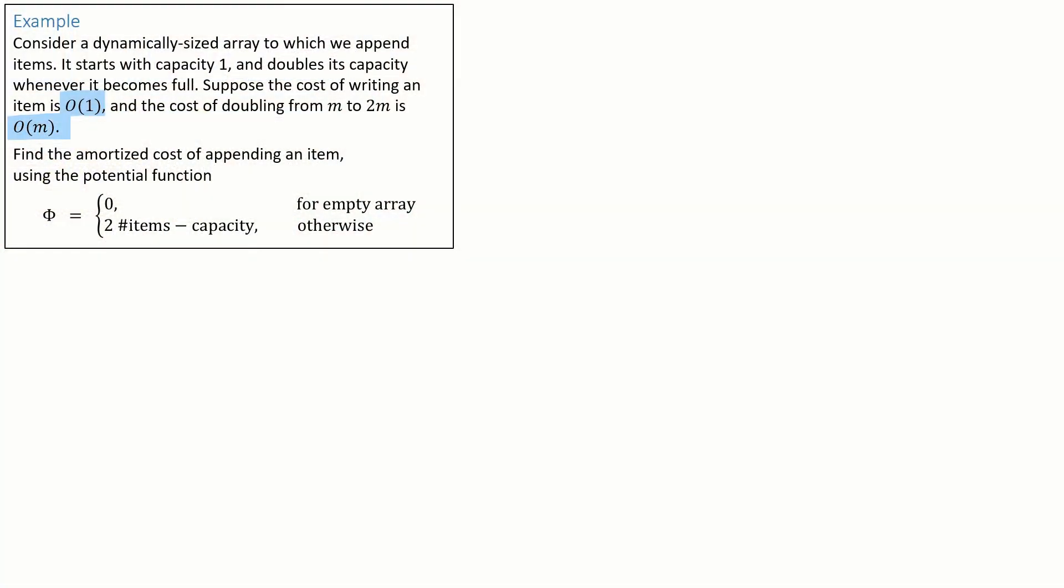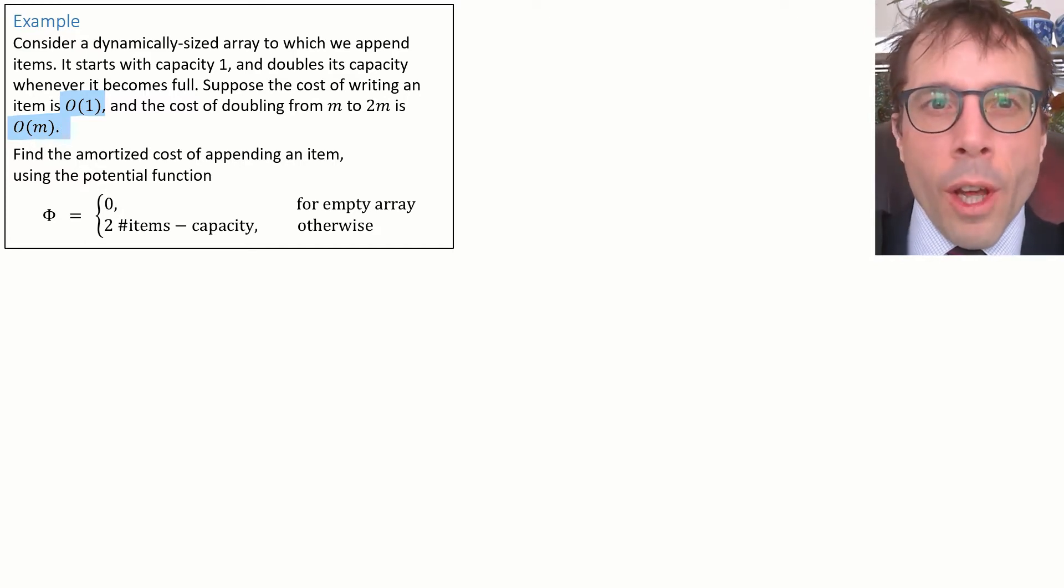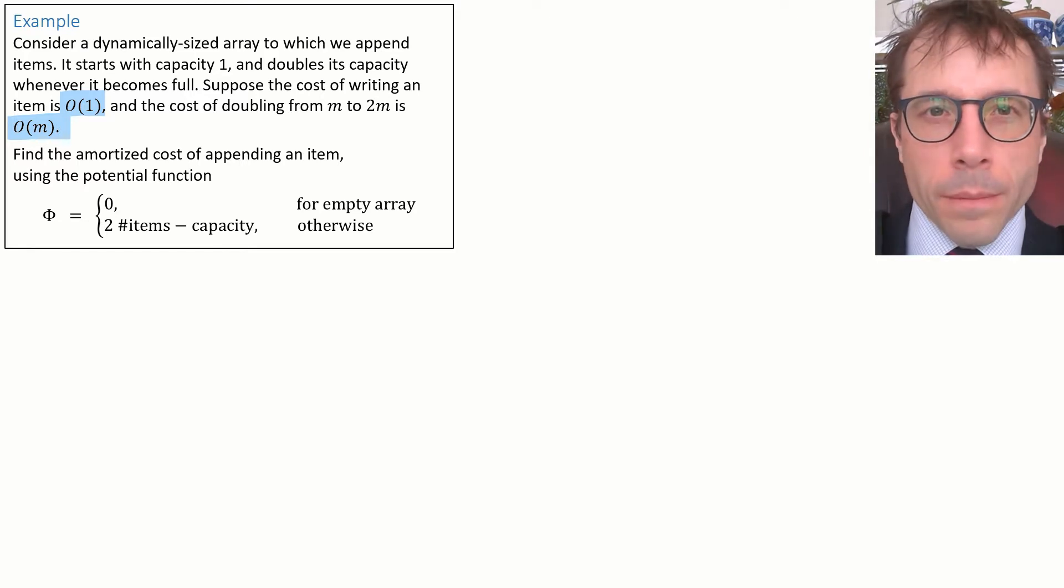Here's the way we'd typically write out an amortization analysis using a potential function. If you're looking closely, you'll notice I've changed the wording here slightly. In this version, it now says, suppose the cost of writing an item is O of 1 and the cost of doubling from m to 2m is O of m. This is the way we usually write about algorithm complexity using O notation. There's always a kappa hidden away, but in practice we never write it out. Okay, well, let's go through the analysis.